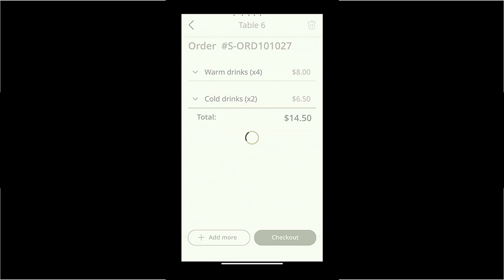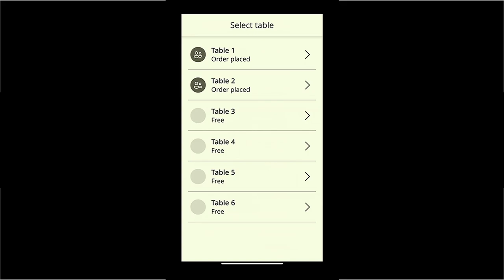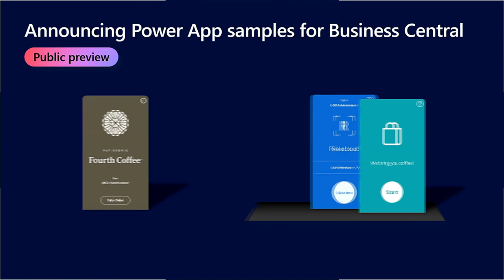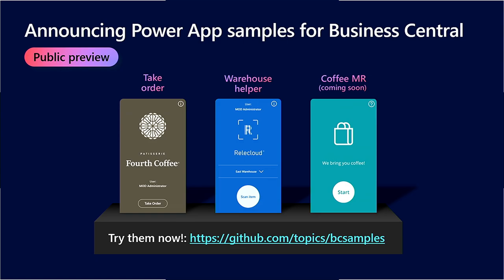Checking out an order means posting it inside Business Central — we use a Power Automate flow to trigger that action, really utilizing a lot of Power Platform capabilities. We're not going to show the Coffee MR app again since we showed it at the keynote yesterday, but they are live on GitHub now under the BC samples topic. You don't need to be a developer — you can fork the repositories and make your own changes, or just go to the releases in the repo, take the zip file and AL file, and download them into your environment.